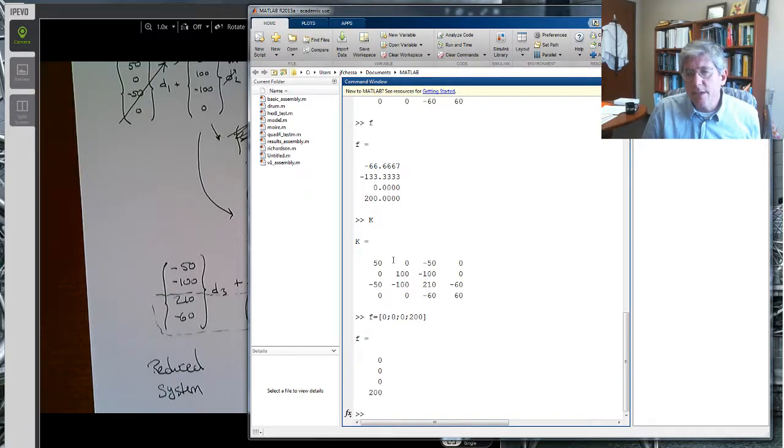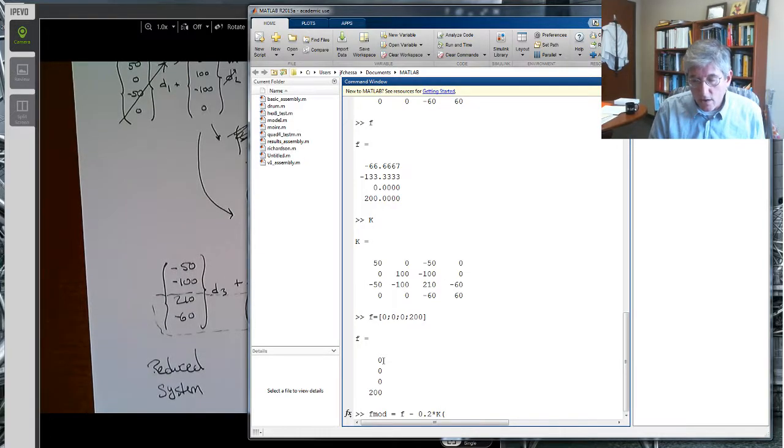So what we need to do is we need to take this second column here, multiply it by the value, the inhomogeneous value for D2, the 0.2, and subtract it from this F. So actually I can do that in MATLAB pretty easily. I'm going to say F mod equals F minus 0.2, that's the value of D2, multiplied by the second column. So the way we get the second column is going to be all the rows, so we use the colon to denote all the rows, and it's the second column.